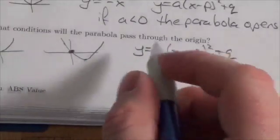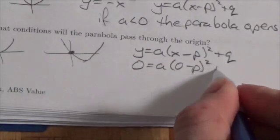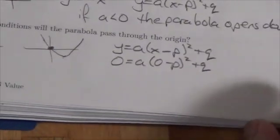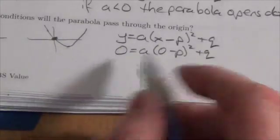Okay, so we're going to let 0 equal A times (0 minus P) squared plus Q. And so what we see here, if I simplify this, maybe I bring the Q over.